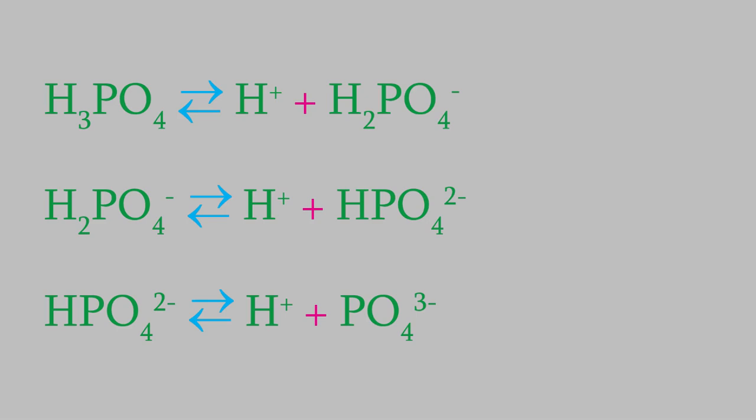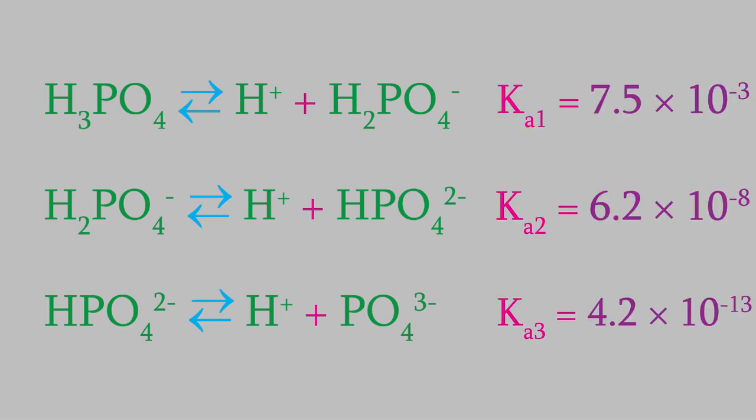Notice that the Ka's get smaller and smaller. That's because it's fairly easy for the acid to lose its first hydrogen, but it gets harder and harder to remove more. If you think about it, that makes a lot of sense. Once the first hydrogen has dissociated, the ion that's left has a negative charge. In order to lose another hydrogen, the second H+ ion will have to get pulled away from that negatively charged ion. That's hard to do, although it does happen a little. And that's why the second Ka value is smaller than the first one, and the third one is even smaller.